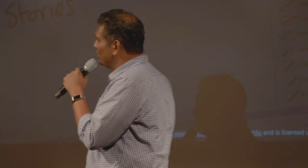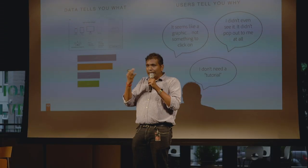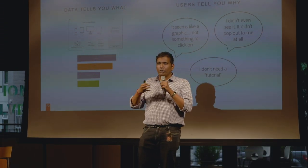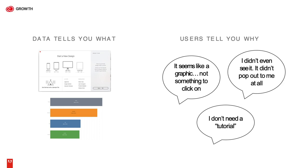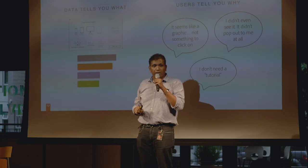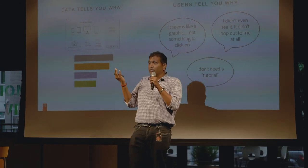This is the next learning: data tells you the what, users tell you the why. The reason I put it here is that most teams over-index on one or the other. Some teams over-index on data — say you're an e-commerce company and you see only 10% of users are adding stuff to the cart, so you directly design an experiment to increase cart additions. But you don't understand the why. Maybe the selection on your site just isn't good, and that's why they're not adding. Best case, you run tests that don't work. Worst case, you run tests that hurt your bottom line.